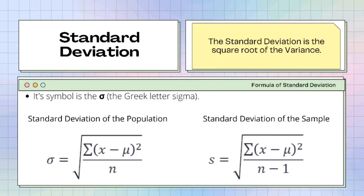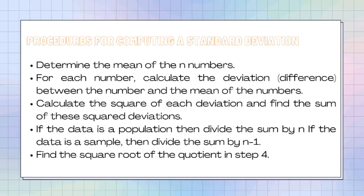The next one is the standard deviation. The standard deviation is the square root of the variance. There is a procedure for computing standard deviation. Step 1: determine the mean of the n numbers. Step 2: for each number, calculate the deviation — the difference between the number and the mean. Step 3: calculate the square of each deviation and find the sum of these squared deviations. Step 4: if the data is a population, divide the sum by n; if the data is a sample, divide the sum by n minus 1. Step 5: find the square root of the quotient from step 4.